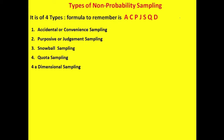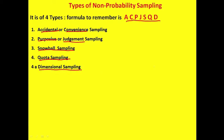Non-probability sampling has four main types. To remember them, we use the mnemonic A, C, P, J, S, Q, D: A stands for accidental or convenience sampling, P stands for purposive or judgment sampling, S stands for snowball sampling, Q stands for quota sampling, and D stands for dimensional sampling — which is a further extension of quota sampling.